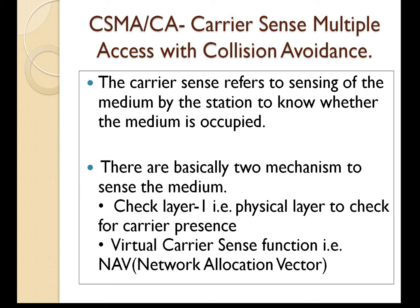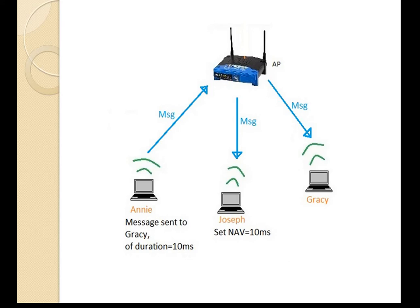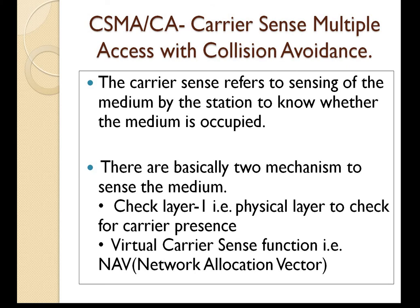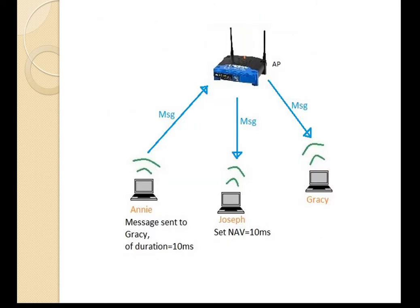NAV is basically a timer which is updated by the station based on the frame duration. The 802.11 frame contains a duration field. This field is usually set larger to account for transmission of the WLAN frame as well as reception of the ACK frame. For example, suppose Annie is transmitting a frame to Gracie. In this case, Joseph updates his NAV equal to the duration of the MAC frame Annie is transmitting. Joseph also ensures he does not transmit until NAV becomes 0. Once the NAV is set, stations can update it further, provided the frame duration exceeds the currently set value of NAV.